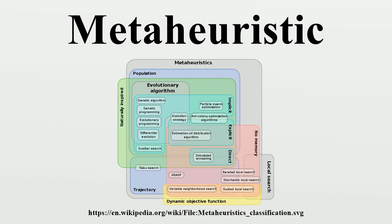1966 - Fogel et al. propose evolutionary programming. 1970 - Hastings proposes the Metropolis-Hastings algorithm. 1970 - Cavicchio proposes adaptation of control parameters for an optimizer. 1970 - Kernighan and Lin propose a graph partitioning method related to variable depth search and prohibition-based search. 1975 - Holland proposes the genetic algorithm. 1977 - Glover proposes scatter search. 1978 - Mercer and Sampson propose a meta-plan for tuning and optimizing parameters by using another optimizer. 1980 - Smith describes genetic programming. 1983 - Kirkpatrick et al. propose simulated annealing. 1986 - Glover proposes tabu search.